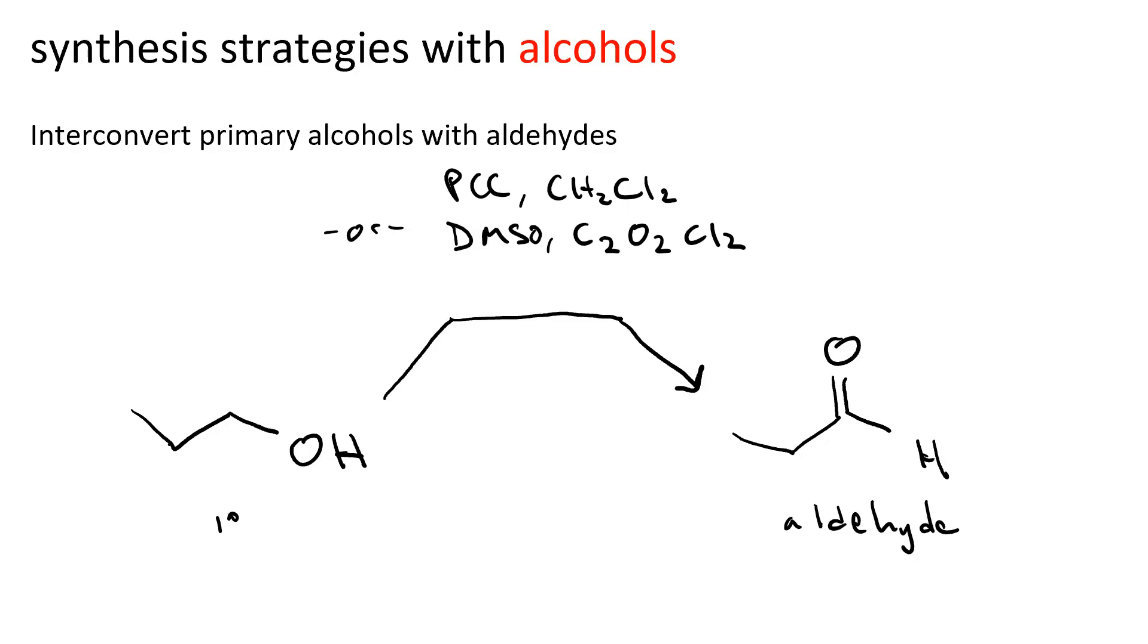C2O2Cl2 is oxalyl chloride. Or we could use the Dess-Martin periodinane, DMP, and that also needs to be done in dichloromethane. So those are three different ways to oxidize all the way to an aldehyde. There's another oxidizing agent called Jones reagent, which involves generating chromic acid in situ, but Jones reagent would take us all the way to a carboxylic acid. We'll go back to that later.